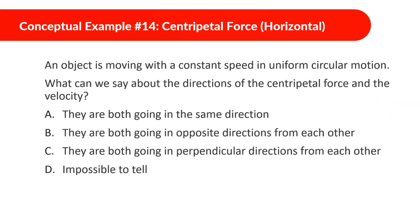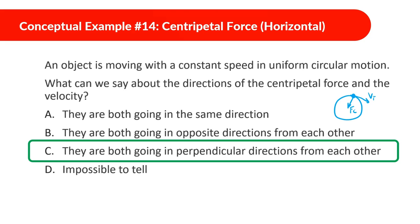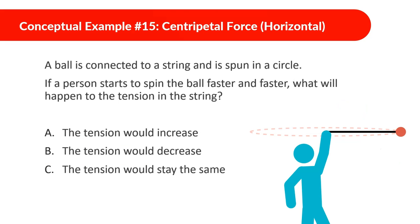Moving with constant speed in uniform circular motion, what can we say about the directions of the centripetal force and the velocity? Similar question — the centripetal force is center-seeking, and the velocity is always tangential. So again, the centripetal force and velocity are perpendicular to each other.